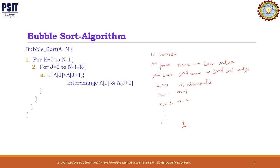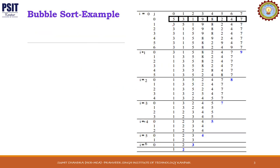At every pass we will be comparing the adjacent elements, and if the value at j is greater than the value at j plus 1, we will interchange a[j] and a[j+1]. As you can see in this figure, this is our unsorted array. When k is equal to 0, j will run from 0 to 6. j is running from 0 to n minus 1 minus k. The value of n here is 8, so 8 minus 1 minus 0 equals 7, meaning j executes 7 times.